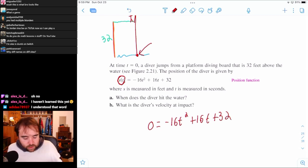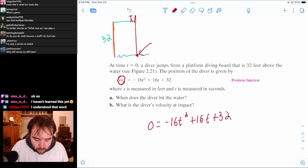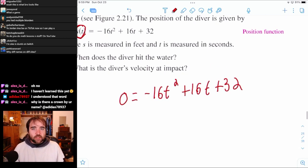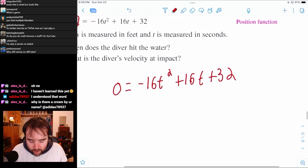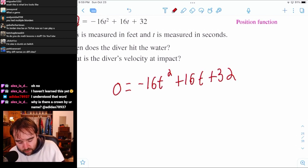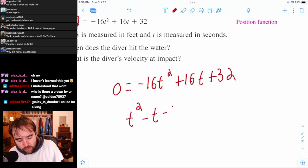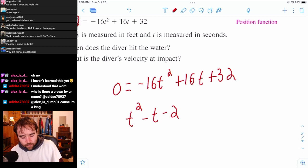So we set that entire equation equal to zero, and now we just got to solve for T. And if you realize quickly that all of these are divisible by 16, that's going to make life a whole lot happier for you. Because you can just divide everything by 16, so it becomes positive T squared minus T minus 32 divided by 16, 2. And so we have that equals zero.